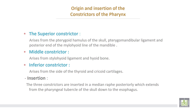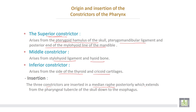The superior constrictor of the pharynx takes origin from the pterygoid hamulus of the skull, the pterygomandibular ligament, and the posterior end of the mylohyoid line of the mandible. The middle constrictor arises from the stylohyoid ligament and hyoid bone. The inferior constrictor arises from the sides of the thyroid and cricoid cartilages. The three constrictors are inserted in a median raphe posteriorly, which extends from the pharyngeal tubercle of the skull down to the esophagus.